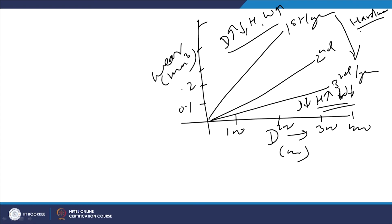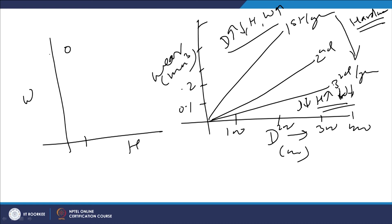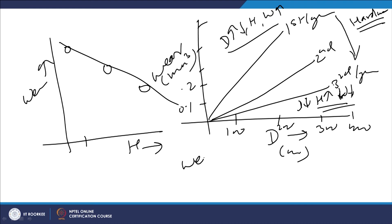Plotting hardness versus wear volume shows that as hardness of the weld surfacing or hard facing increases, the wear volume decreases. This is consistent with established laws: wear is found to be inversely proportional to hardness. Higher hardness leads to lower wear magnitude.